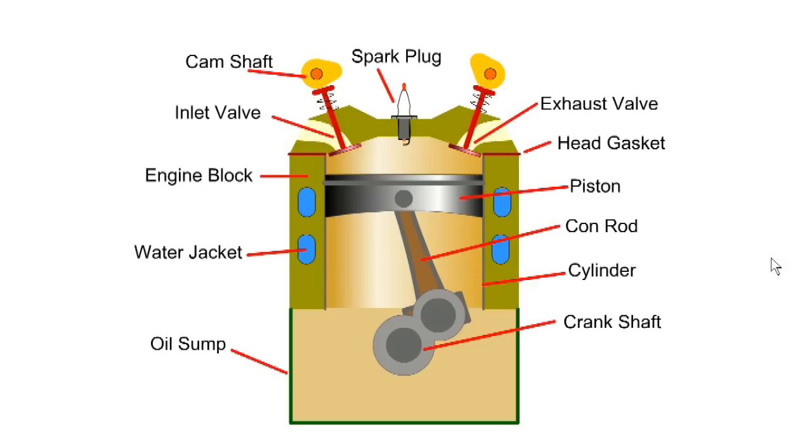The head gasket provides a seal between the block and cylinder head. If the engine overheats, the head can warp, releasing the seal provided by the gasket. If coolant or combustion gases leak, the gasket must be replaced. This is often referred to as a blown head gasket.